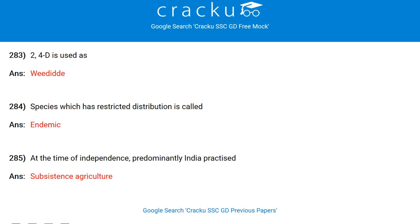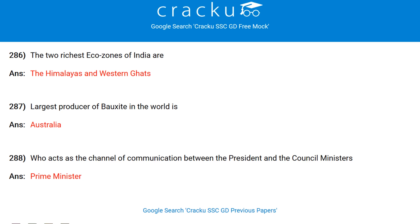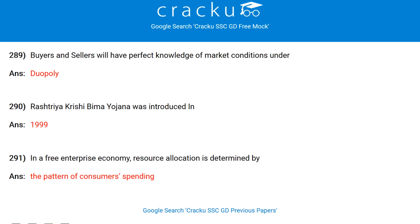Which Charter Act brought to an end the East India Company's monopoly in India's foreign trade? Charter Act of 1813. Widal test is used for the diagnosis of typhoid. 2,4-D is used as a weedicide. Species which has restricted distribution is called endemic. At the time of independence, India predominantly practised subsistence agriculture. The two richest eco-zones of India are the Himalayas and Western Ghats.